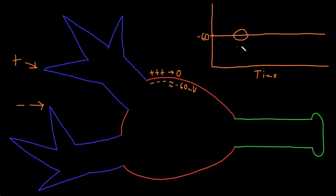Graded potentials do not pass into the axons of most types of neurons. Instead, most axons have a different membrane potential change called an action potential. Action potentials start at the area called the trigger zone, which is the initial segment or the start of the axon.